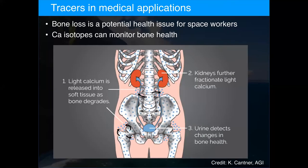The third application is non-traditional stable isotopes in medical sciences. Calcium is a key element in bone, and some people — especially space workers — suffer from bone loss. Calcium isotopes can be used to monitor this: as calcium is lost from bone to soft tissue, lighter isotopes migrate to soft tissue faster, becoming enriched there and passing through the kidney into the urine where they can be detected.